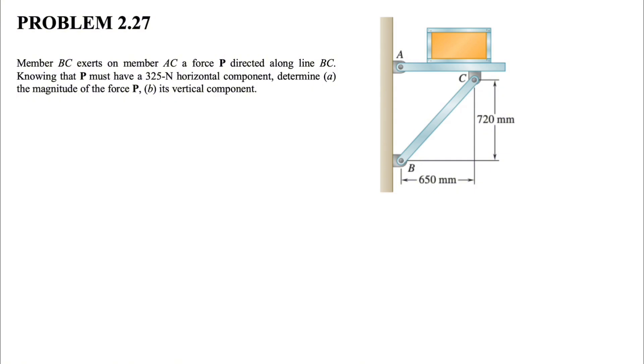From the question, we know that the force P is directed along the line BC. There's a concept that we're going to get familiar with in the next chapters, and that's the concept of two-force member. When we have a member that has forces only on two ends, the force in the member will be along the line that connects these two points.